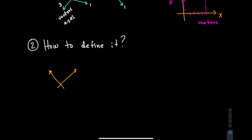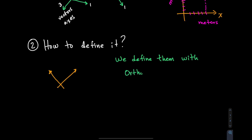In engineering, we define coordinate systems with orthogonal unit vectors. Let's break this phrase down and talk about what orthogonal, unit, and vectors each mean.